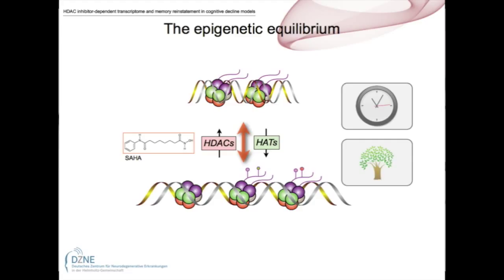The environment can interact at this level with this balance, but also certain disease conditions such as age-associated cognitive decline or Alzheimer's disease can cause an imbalance in this process. There is also a way we can intervene externally by using certain compounds such as HDAC inhibitors. Such an HDAC inhibitor is, for example, SAHA, and this is the molecule we've chosen to work with for our study.